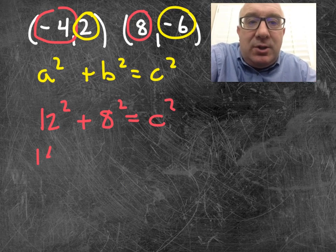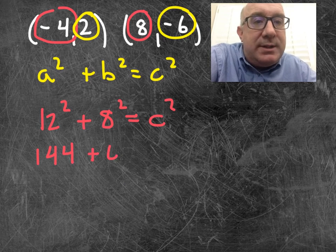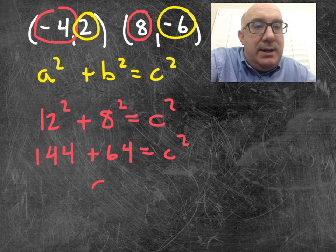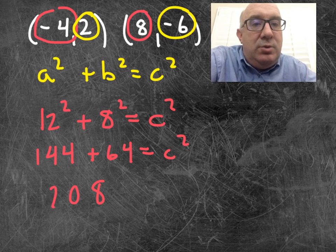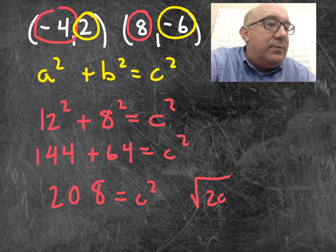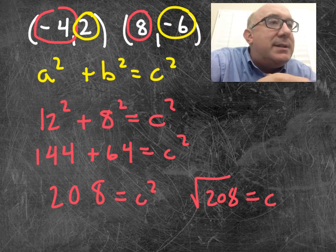You can solve this. 144 plus 64 equals c squared. We've got an 8, 0, 2, 0, 8 looks like. And then our answer is the square root of 208 would be the distance there.